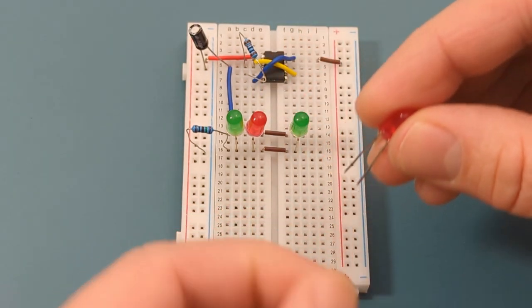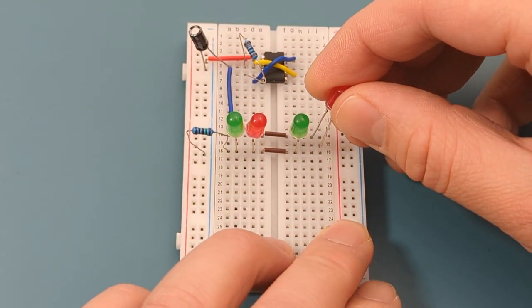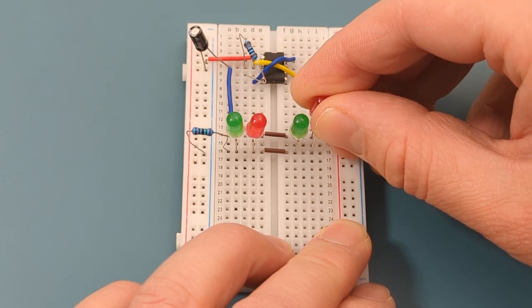Notice that the green LEDs have the longer legs in row 16, while the red LEDs have theirs in row 14.